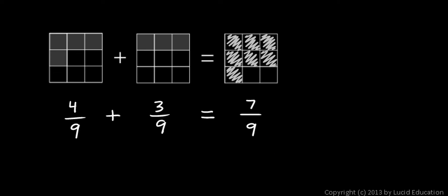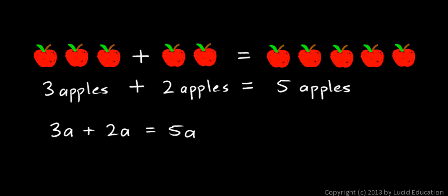These are what we call like fractions, and that's a term you should know. They're like fractions. Just like we call 3a and 2a like terms, because they both represent the same type of thing. In this case, they represent a's, or you could say apples.